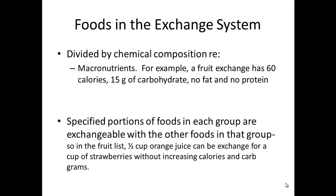Foods in the exchange system are divided based on chemical composition regarding macronutrient content. For example, a fruit exchange has 60 calories, 15 grams of carb, no fat, and no protein. Specified portions of foods in each group are exchangeable with the other foods in that group. So in the fruit list, one half cup of orange juice can be exchanged for a cup of strawberries without increasing calories and carbohydrate content.